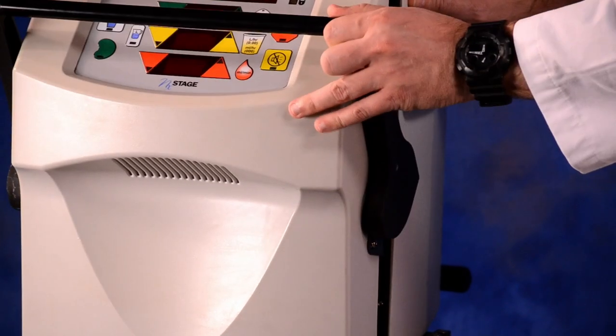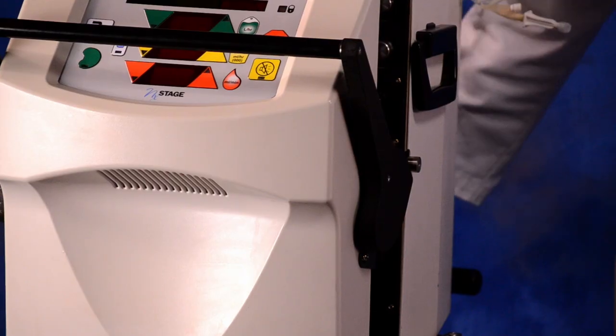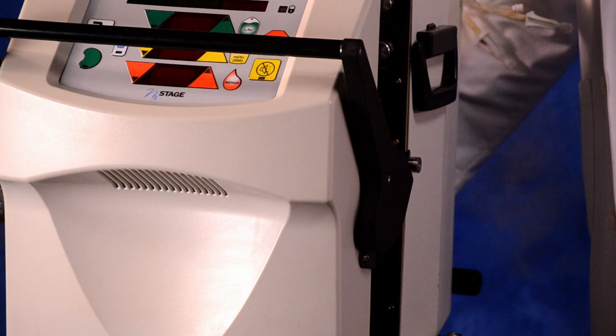We'll start with setup. Gather and inspect your supplies. Open the cycler door completely and leave the handle up. Turn the cycler on. Wait for the yellow bars to flash.